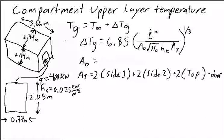Which is normally this equation, and it goes with this: Tg is equal to the ambient gas temperature plus the change in gas temperature. So our upper layer gas temperature is this Tg, and our change in gas temperature can be found using this equation.